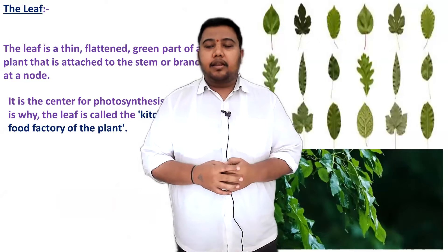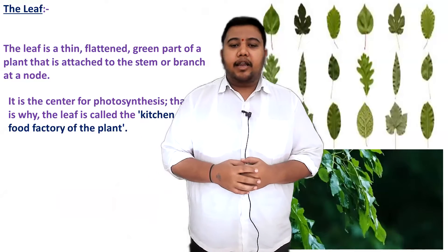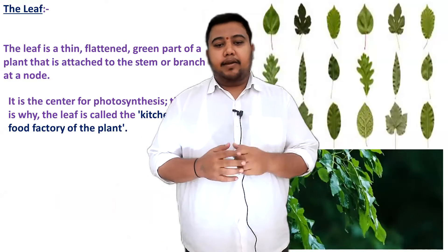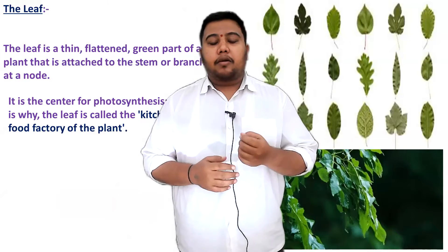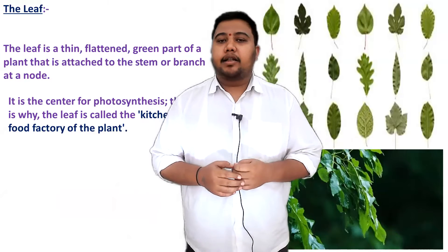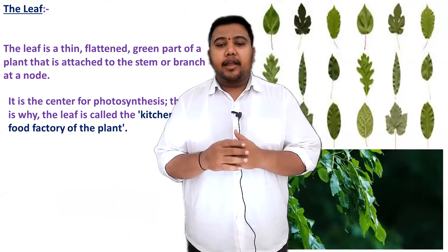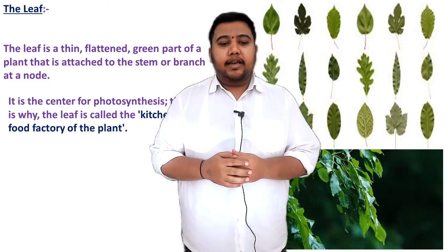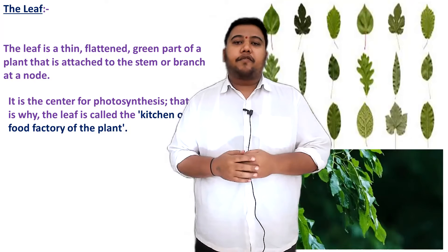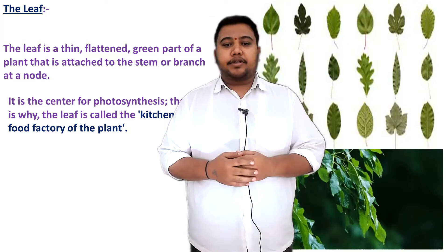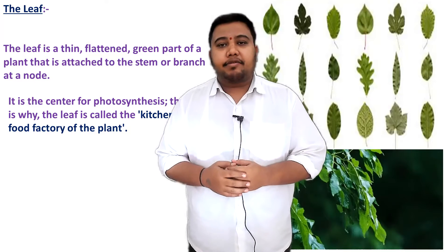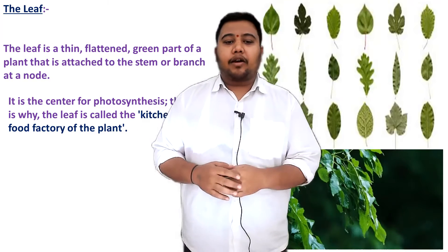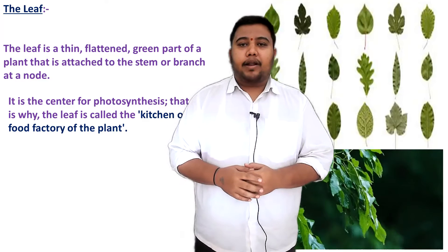A leaf is a thin, flattened, green part of a plant that is attached to the stem or branch at the node. It is mostly green in colour, and it is the centre for the photosynthesis process. That is why it is called as the kitchen or the food factory of the plant.